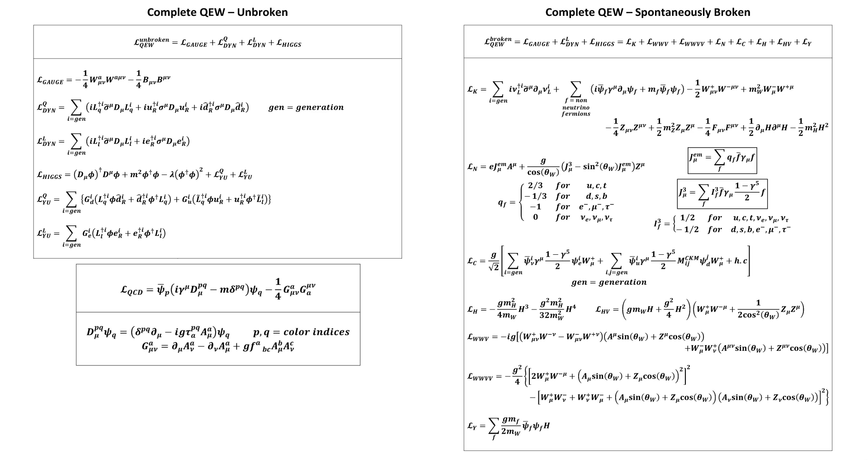The much more difficult parts of constructing the complete standard model Lagrangian, which are constructing the QEW and QCD pieces separately, have already been done in the aforementioned other videos. So in short, the reason why our task in this video is so short is just because it really is the last step after the hard stuff is done.